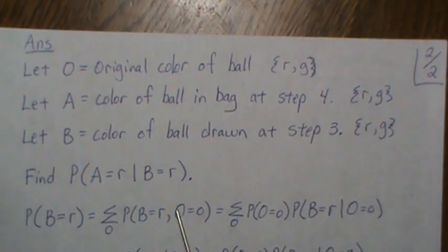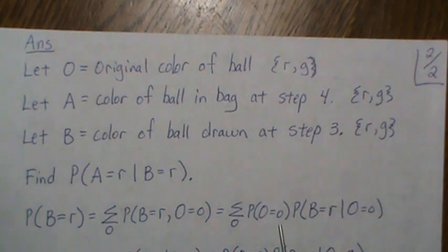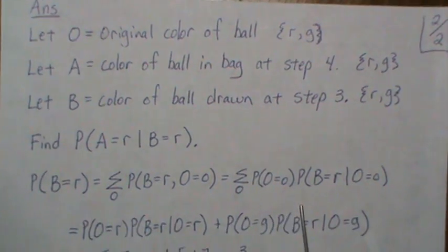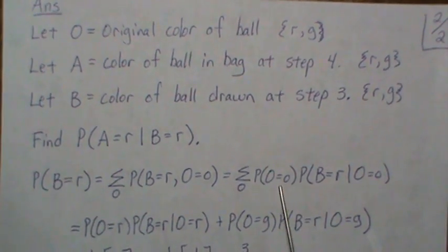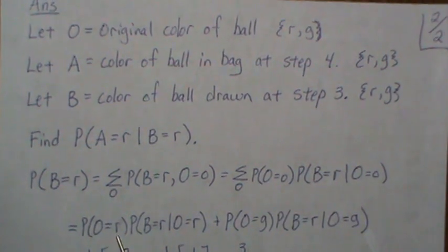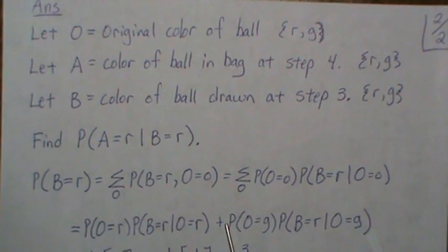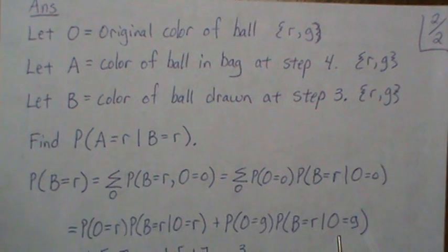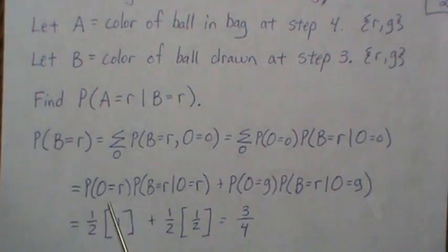This intersection can be written in conditional probability. To be very explicit, this little O can be red and then we add it to it being green.